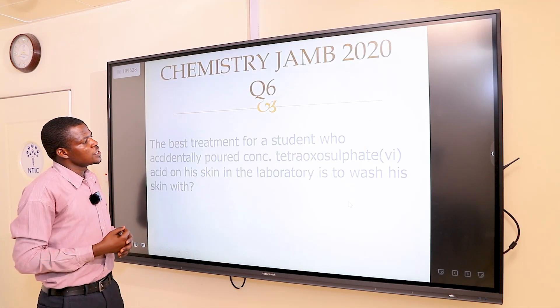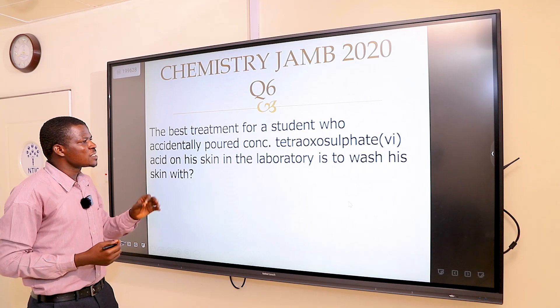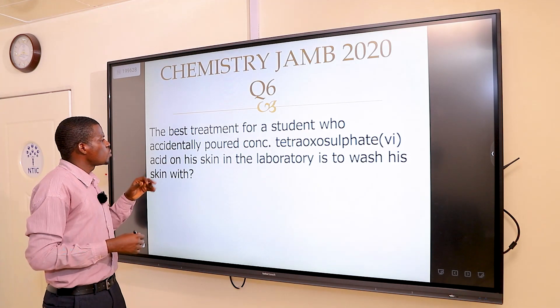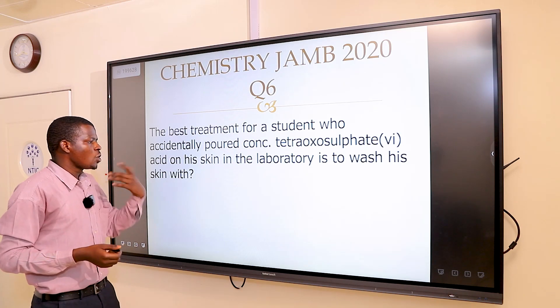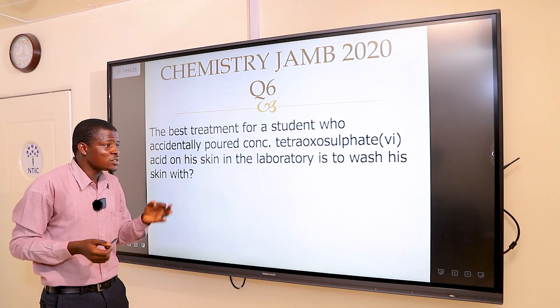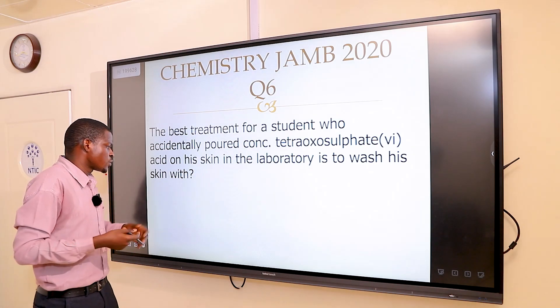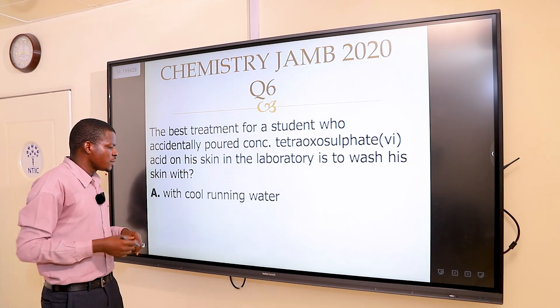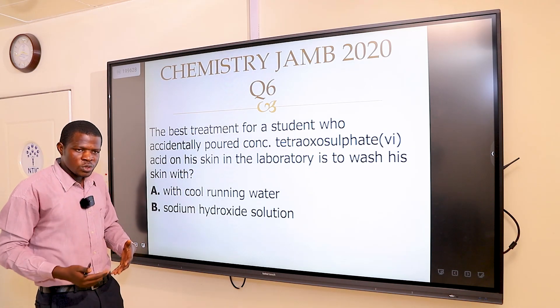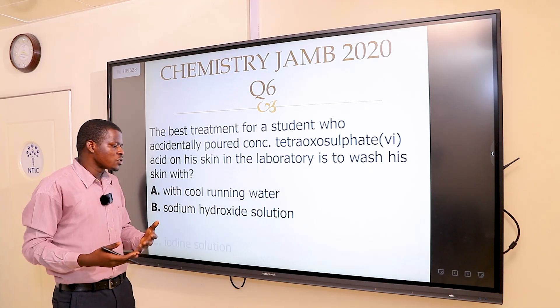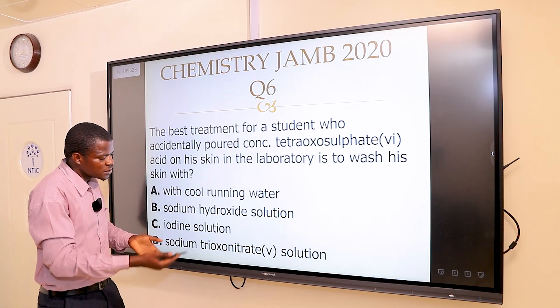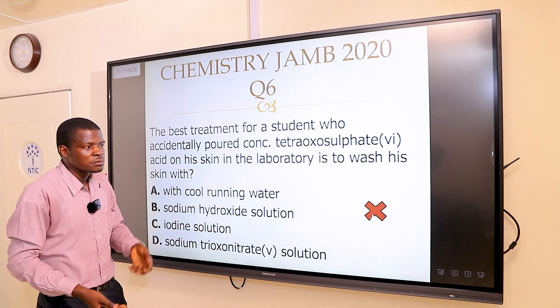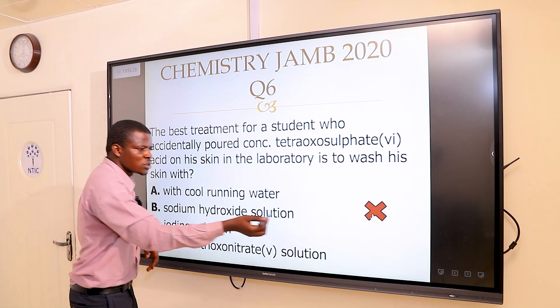The next question says: the best treatment for a student who accidentally poured concentrated tetraoxosulfate(VI) acid on his skin in the laboratory is to wash his skin with. The options were: A, cool running water; B, sodium hydroxide solution; C, iodine solution; and D, sodium trioxonitrate(V) solution. Option B is wrong.